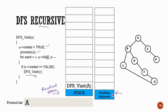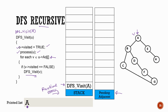We start with the start node A. DFS for this node is called — DFS visit A is called, so the function is called as DFS(A). A is passed as a parameter of this function. As part of this function, A is visited and printed, so A is visited and A is printed.